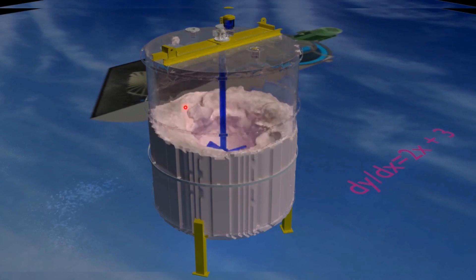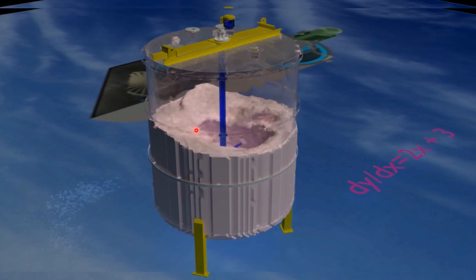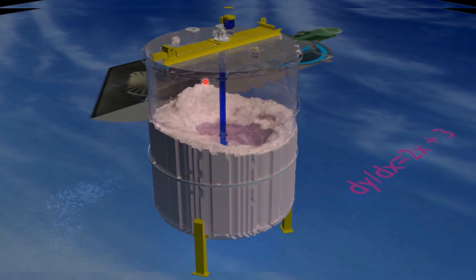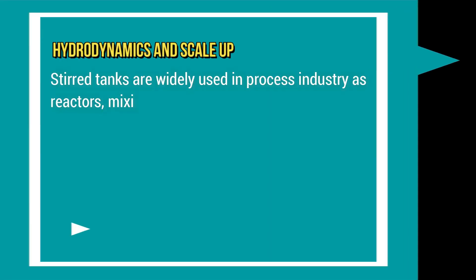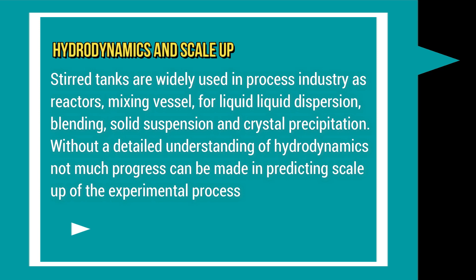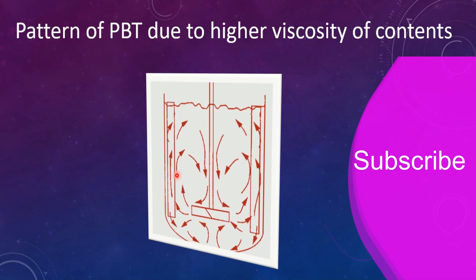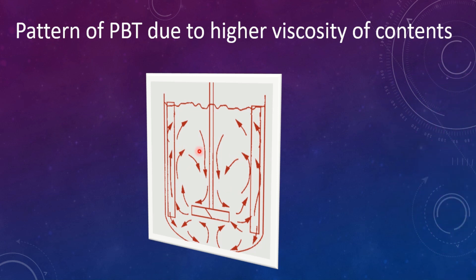To address the vortex problem, baffles are used. Using the PBT with baffles, the two loops also exist as discussed earlier.